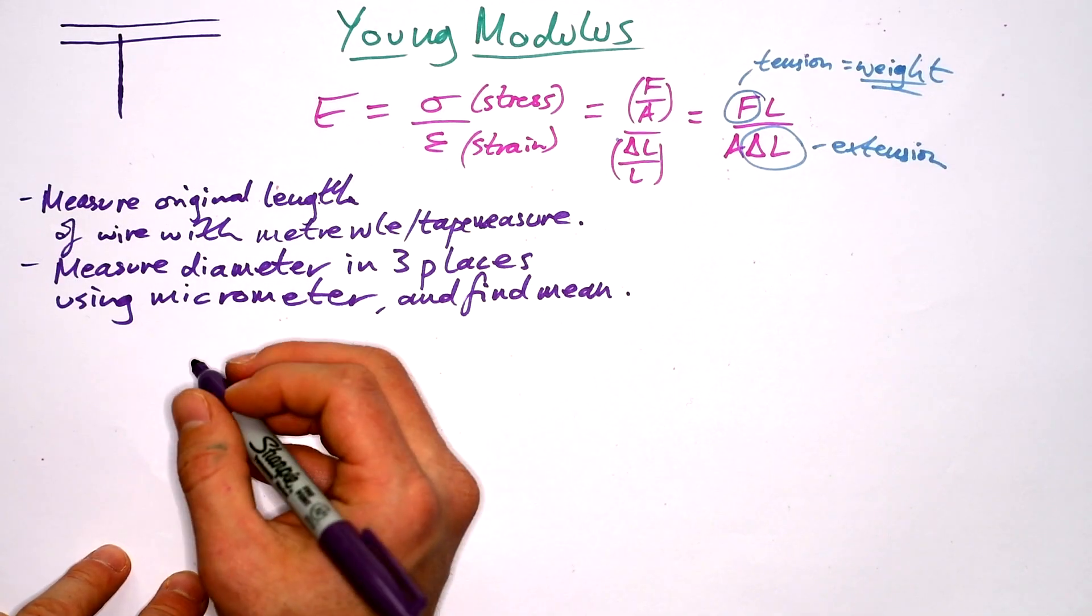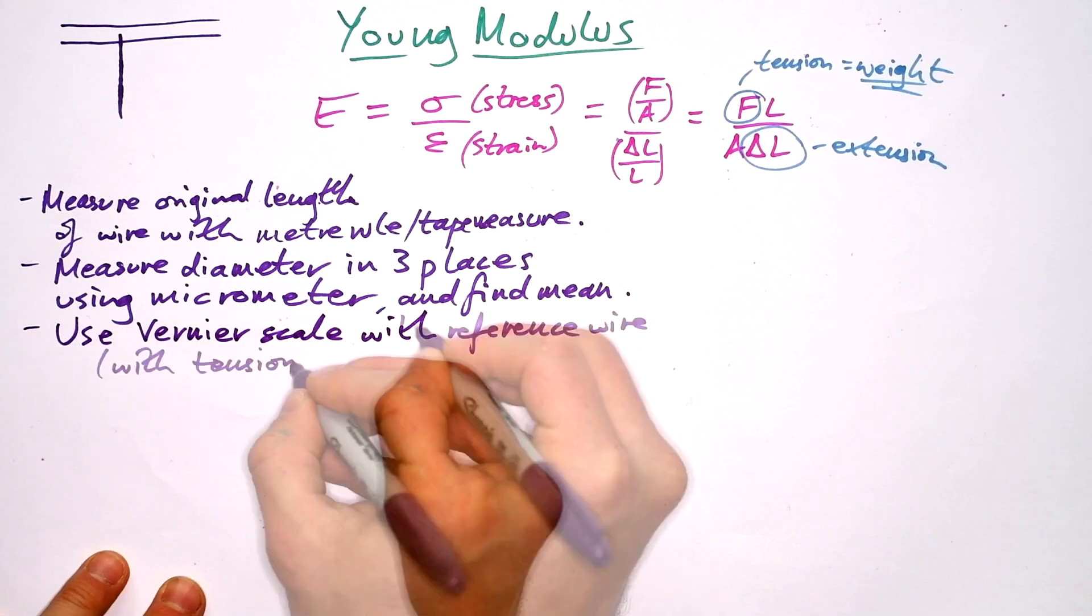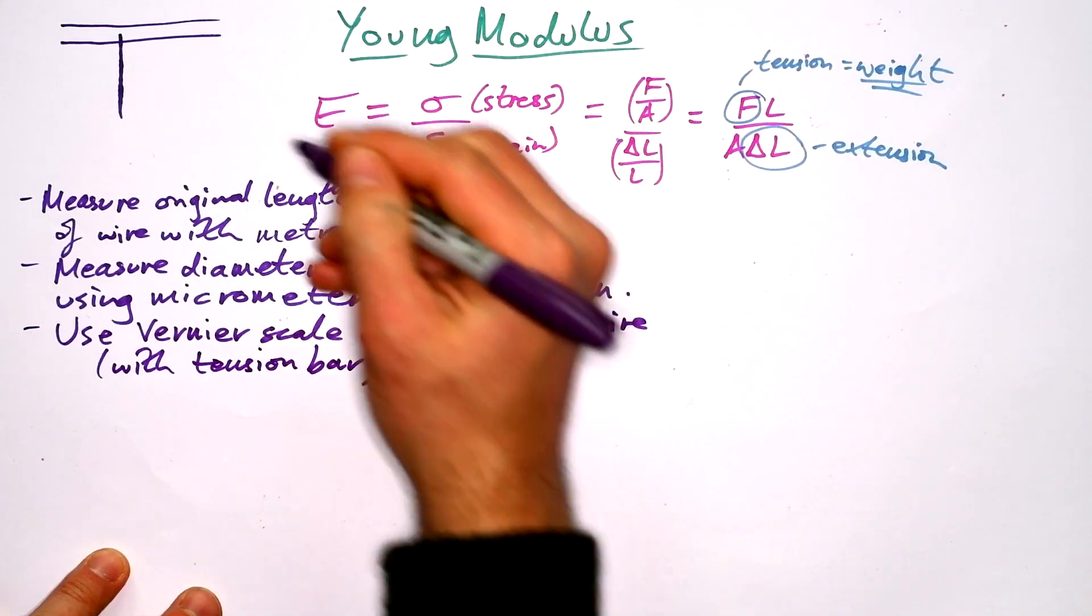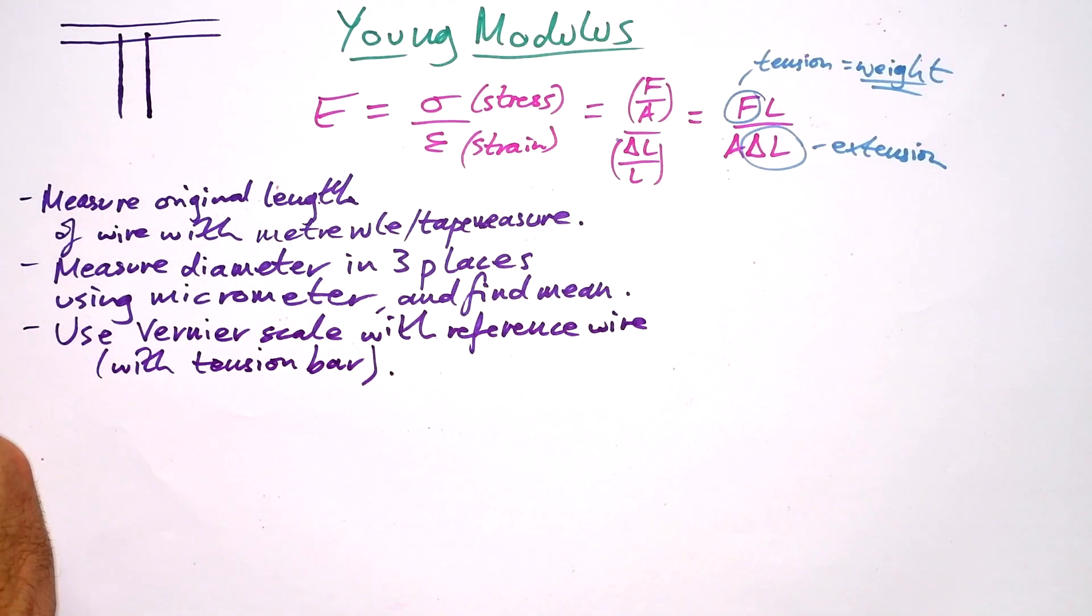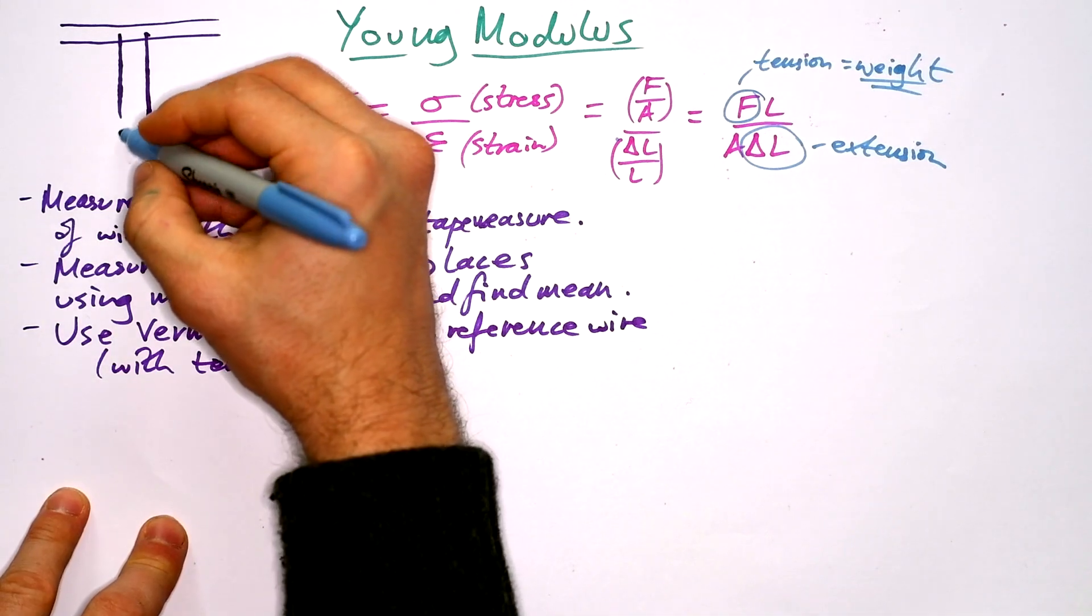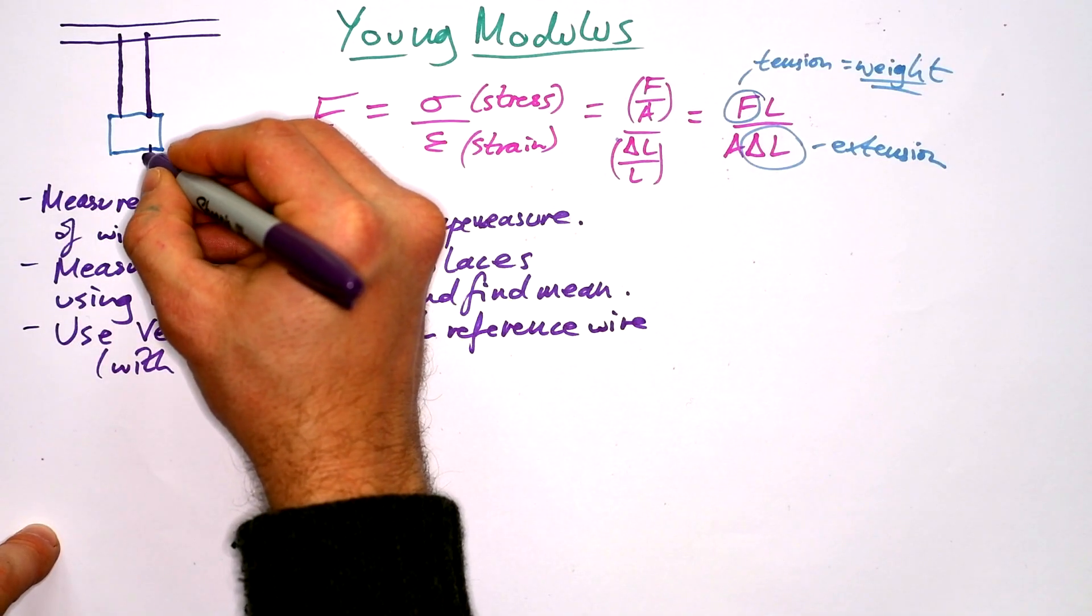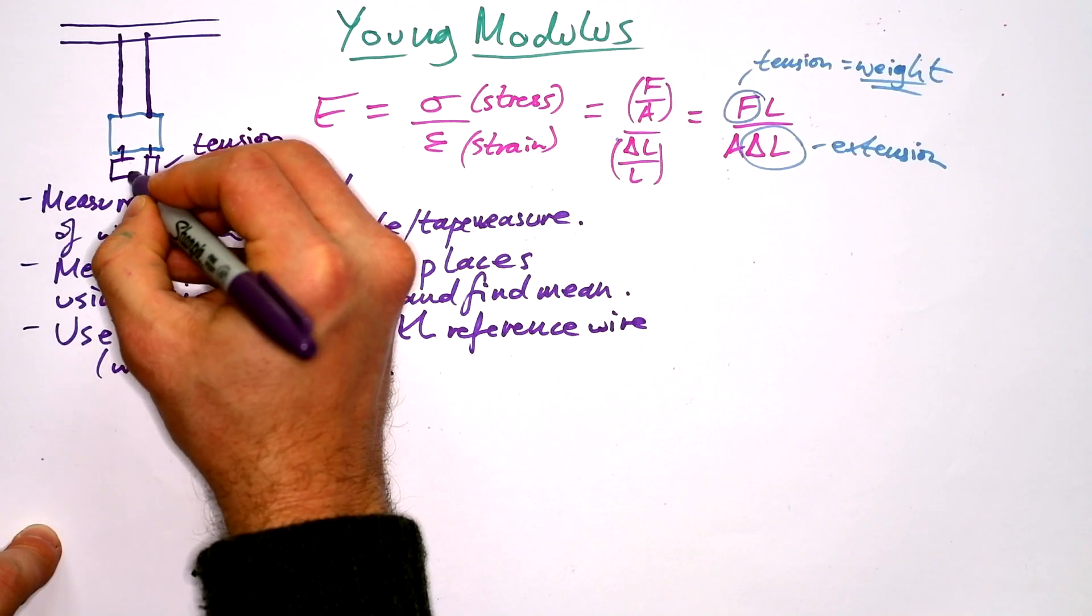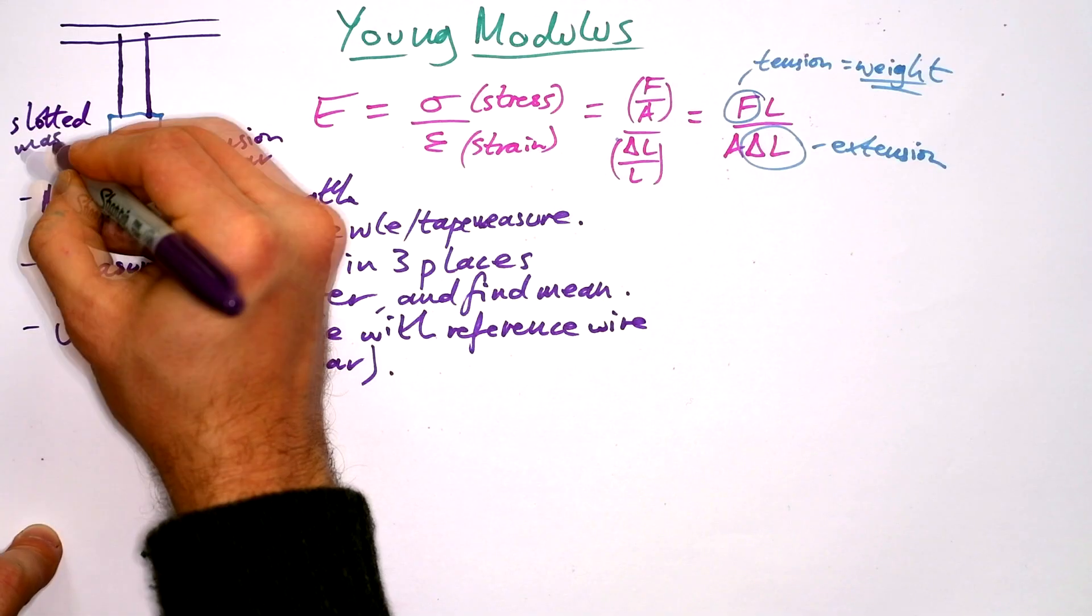So there's various ways that you can do this, but the way that I do it is you use a Vernier scale with a reference wire. And we want to put a tension bar on that as well, basically just a little bit of weight to keep it taut. Now, what is a reference wire? Well, it's a wire of exactly the same material and width and all that jazz. We want them to be identical. And then we attach those to the Vernier scale. And then we add a tension bar onto the reference wire. And then we add our slotted masses onto the wire that we want to change the length of.